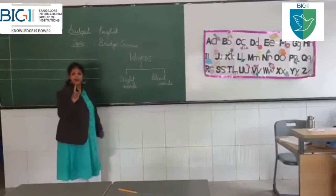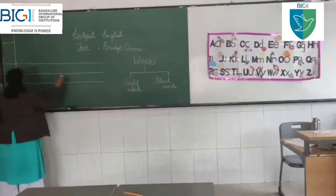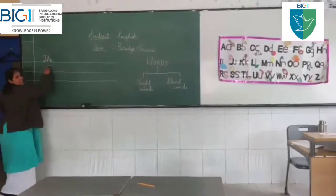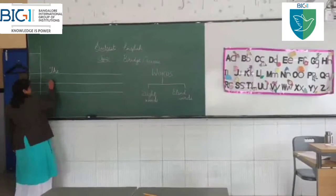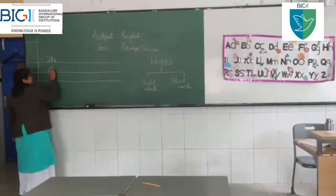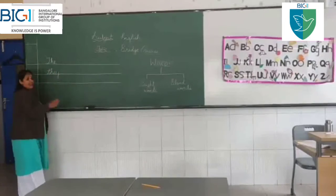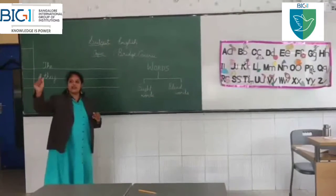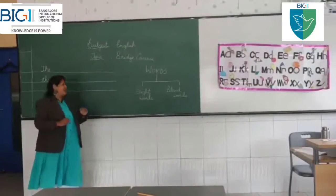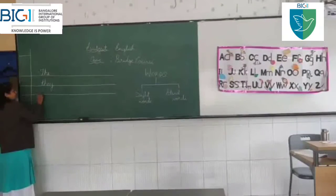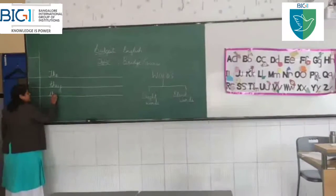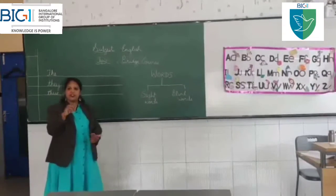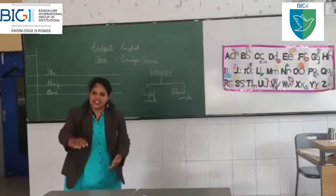Shall we learn some sight words? For example, we have T-H-E, 'the'. If you add Y to that, you get T-H-E-Y, 'they'. When you see a group of people standing together at a distance, you say 'they are standing there'. The same way, when you have a bunch of books close to you, it is called 'these'.